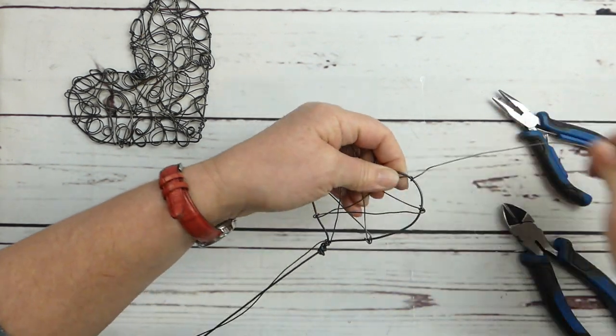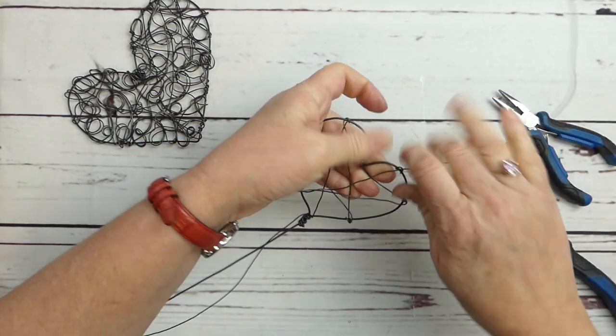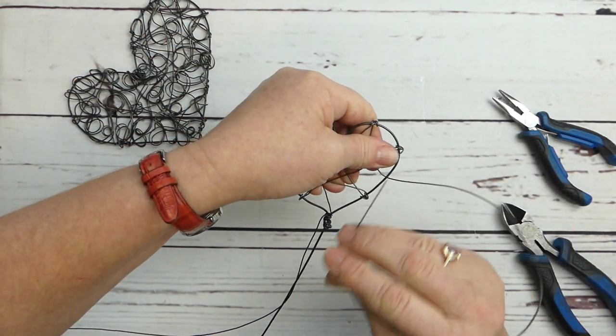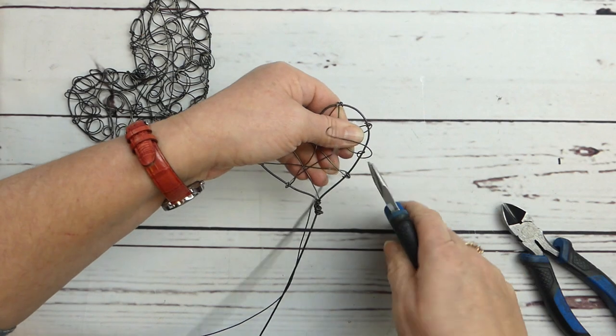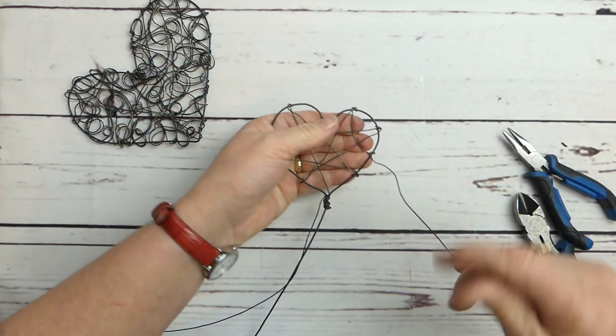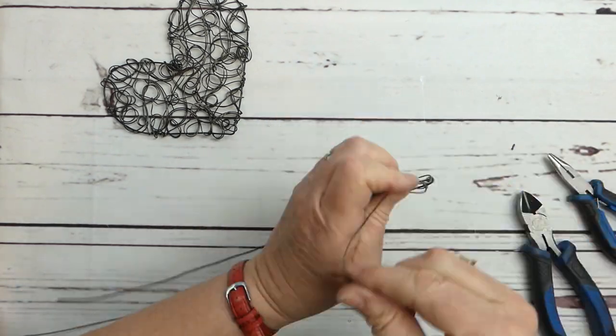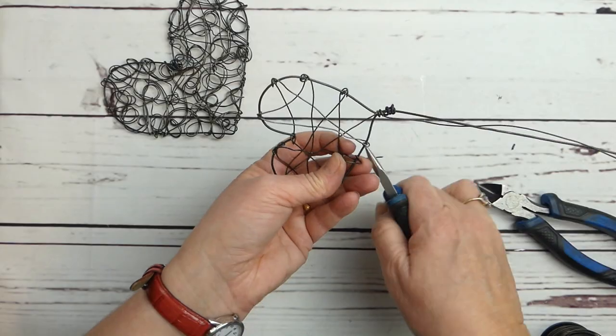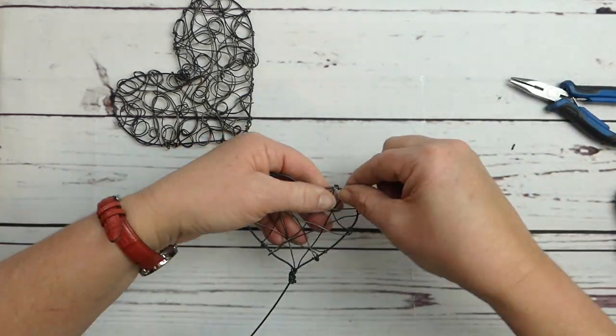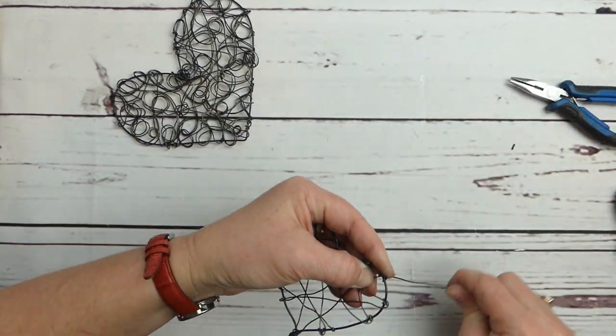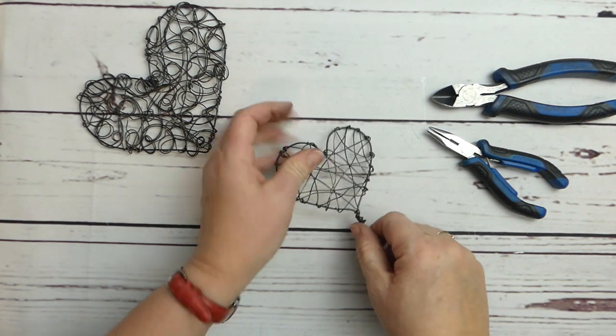I mean, you're going to have some movement with this as it's just a random messy, messy wrap. But we're getting there with this part of it. So just continue to wrap. Alright, so now that we have finished our messy wrap, we just want to go in and we want to create a little bit of movement in these wires.